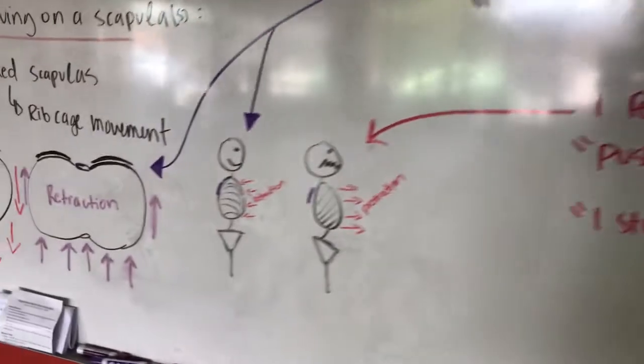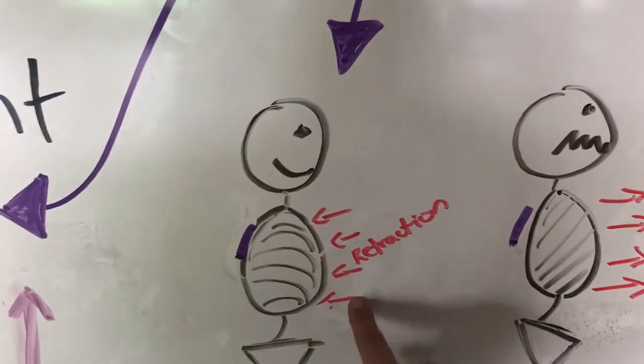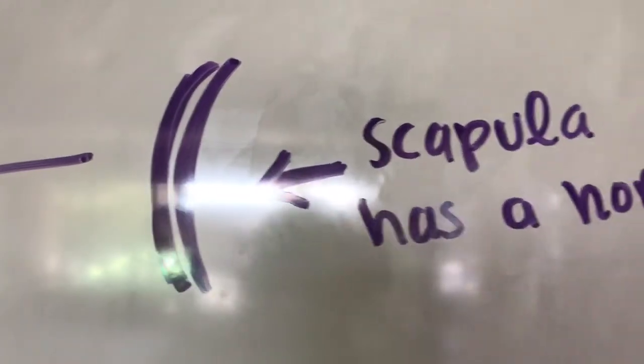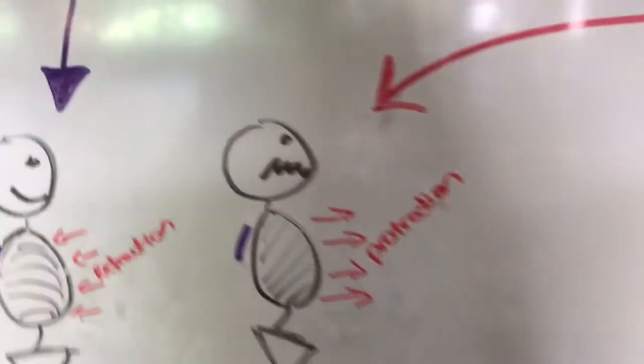And the reason is because they never started in a position of a ribcage retracted, which means a scapula sitting on a ribcage. When you get a scapula sitting on the ribcage, you get good things happening.